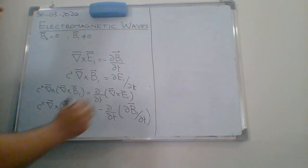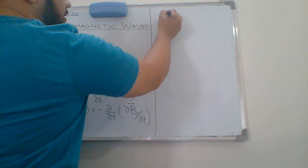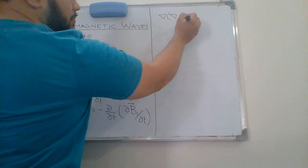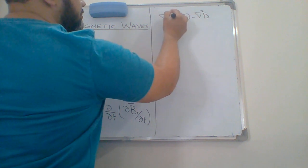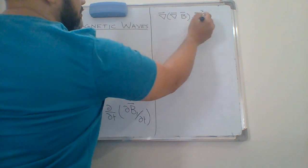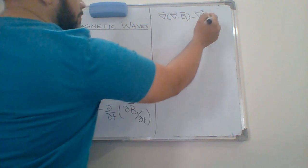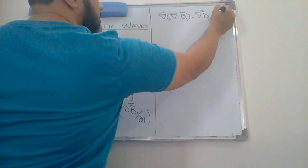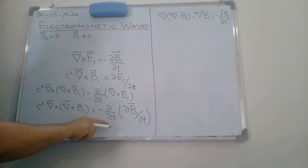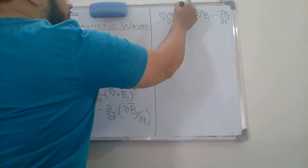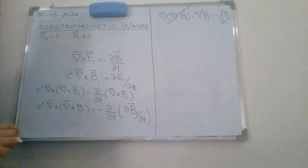Since del cross del cross b1 will be del del dot b minus del square b, this equals minus partial squared b1 by partial t squared. You can see that for each and every case, del dot b equals 0. So this term will vanish.